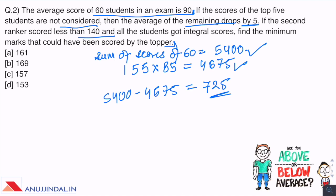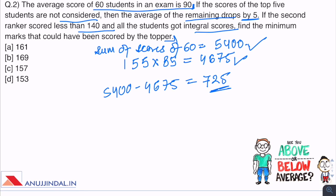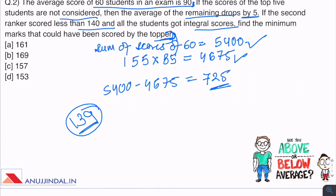There are 5 people - 1st, 2nd, 3rd, 4th, 5th ranker. If the second ranker scored less than 140 and all students got integral scores, then find the minimum marks scored by the topper. Given that the other 4 students' marks are lesser than 140, we can say the maximum mark the 4 students could achieve is 139. As the question asks for minimum marks scored by the topper, let the person who scores highest be x. Then x plus 139 into 4 equals 725.